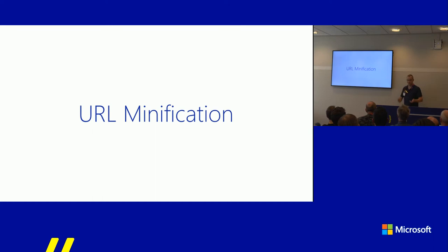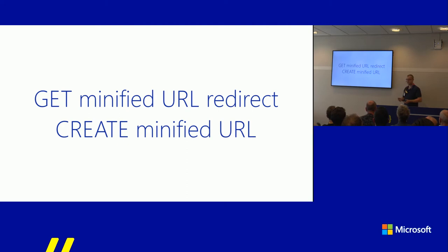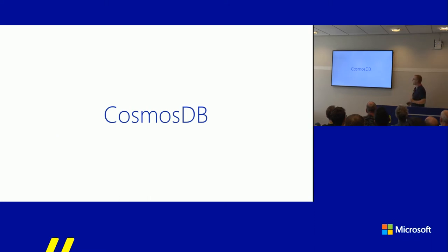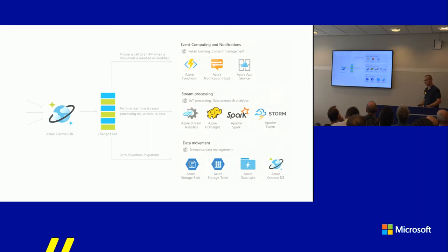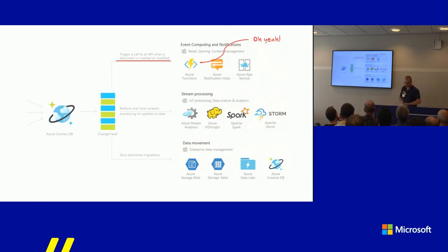How hard can it be to create a URL shortener? You just need two endpoints — one for retrieving the minified URL redirect, and one for creating URLs. You also need some kind of repository to store them, so why not use a serverless repository like Cosmos DB? One other thing you get with Cosmos DB nowadays is access to the change feed, which is fairly new. The change feed enables you to act on changes that are happening inside your repository, so when someone inserts a new minified URL, you can trigger an Azure Function to do something with it, like updating a cache.